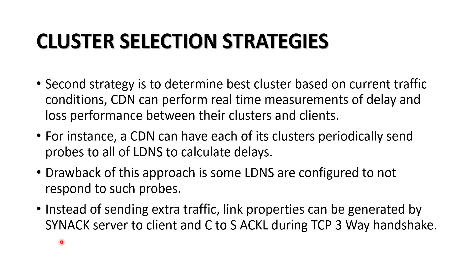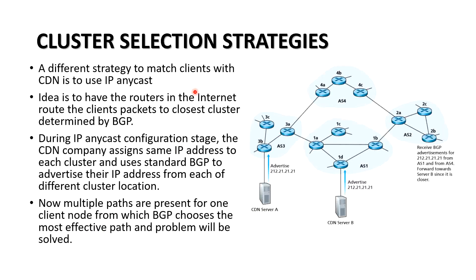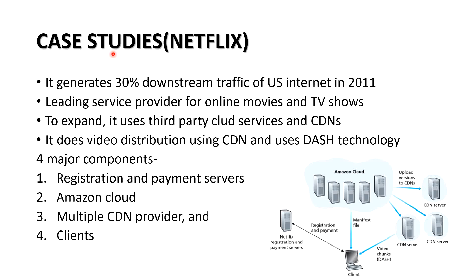The third strategy is using IP Anycast. Here, the authoritative server gives the same IP address to all cluster servers, and the BGP protocol is followed by the LDNS. The cluster with the closest path is selected for serving. BGP derives the closest path from the LDNS, and the server with the closest path will serve the client.